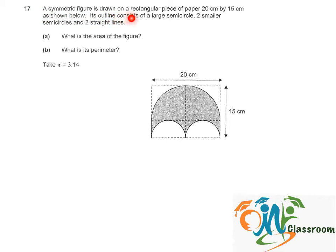A symmetric figure is drawn on a rectangular piece of paper 20cm by 15cm as shown below. Its outline consists of a large semicircle, two smaller semicircles and two straight lines. What is the area of the figure?